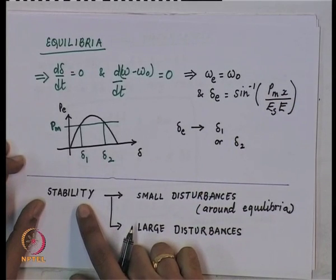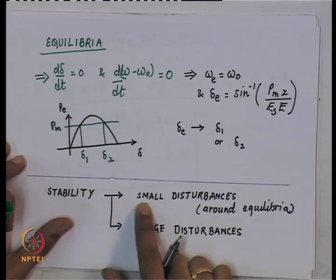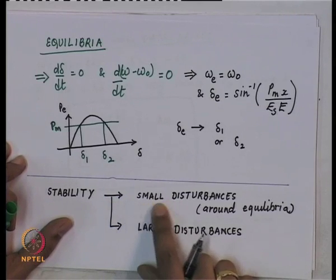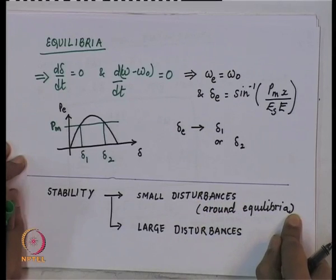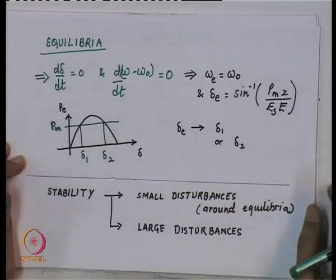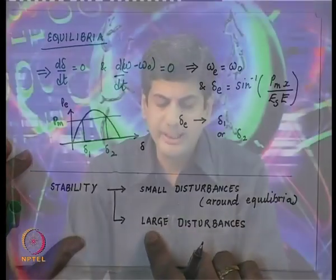We set upon ourselves to find the stability of this system and did an analysis for small disturbances around these two equilibria. We need to understand the large disturbance behavior. The large disturbance behavior is important because the phenomenon of loss of synchronism is a manifestation of the non-linear behavior of the system. Small disturbance stability around equilibria is easier to analyze, which is what we did in the last class.